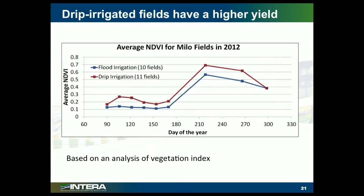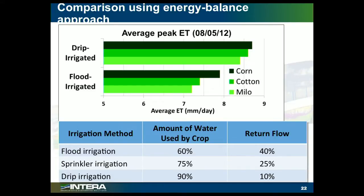We also looked at a vegetation index for these fields. While the drip irrigated fields seem to be consuming more water, we're also getting higher yields in general. So that all makes sense — it fits together that drip irrigation is very efficient in getting the water right to the plant. Generally they're using more water, but we're also getting higher yields.